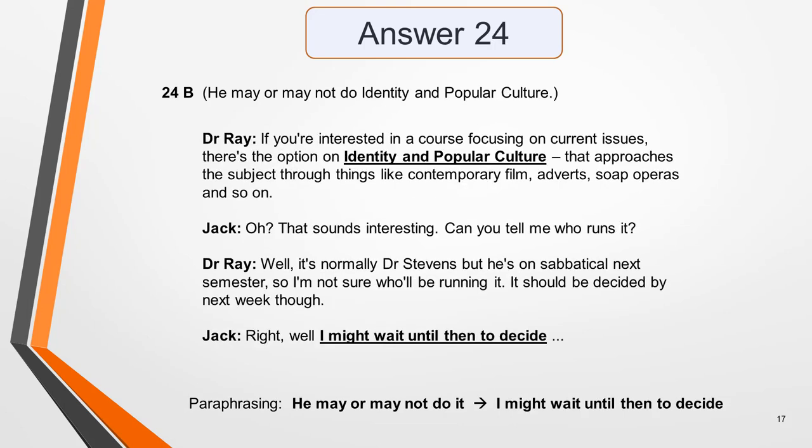Answer 24 is also B — he may or may not do identity and popular culture. In the dialogue, the tutor says: 'If you're interested in a course focusing on current issues, there's the option of identity and popular culture.' That course approaches the subject through things like contemporary film, adverts, soap operas and so on. Jack says: 'Oh, that sounds interesting. Can you tell me who runs it?'